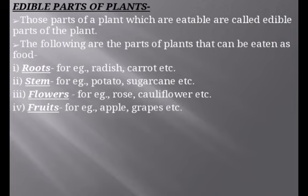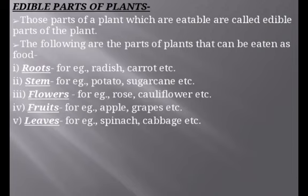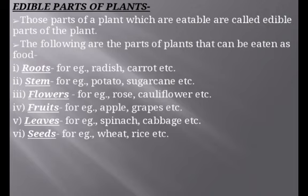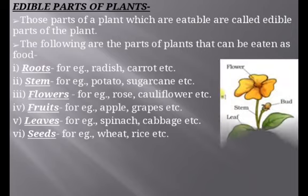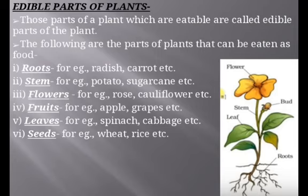We also eat fruits — apple, grapes, banana, mango, and many others we get from plants. Leaves such as spinach and cabbage are the leaf parts of the plant; spinach is a very good source of iron. Seeds — the cereals we eat like wheat, rice, and mustard — are the seed parts of the plant. So these were the edible parts of the plant, shown in the given picture.